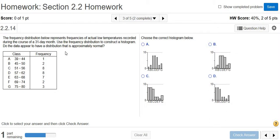The frequency distribution below represents frequencies of actual low temperatures recorded during the course of a 31-day month. Then it wants us to construct a histogram. Then we want to know if the data is approximately normal.